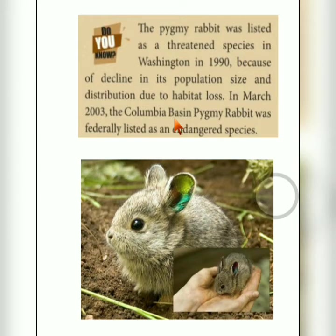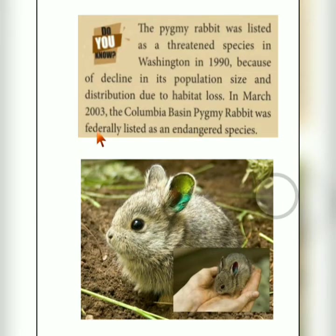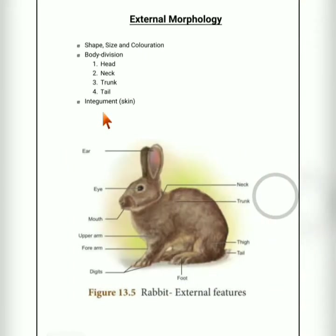In March 2003, the Columbia Basin pygmy rabbit was listed as an endangered species. This type of rabbit can only be seen in the Columbia Basin area of Washington State. Learn this also as it may appear as an exam question.